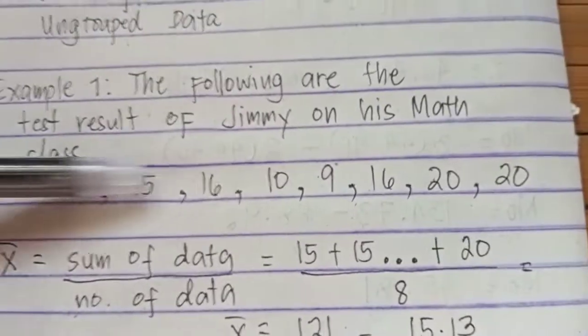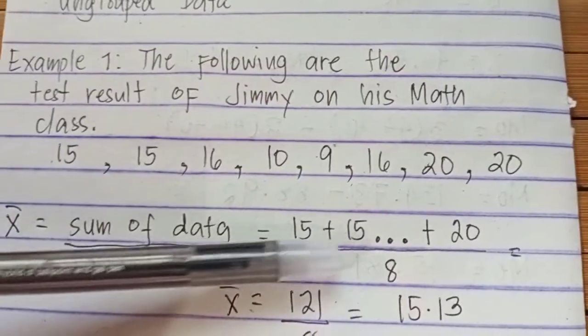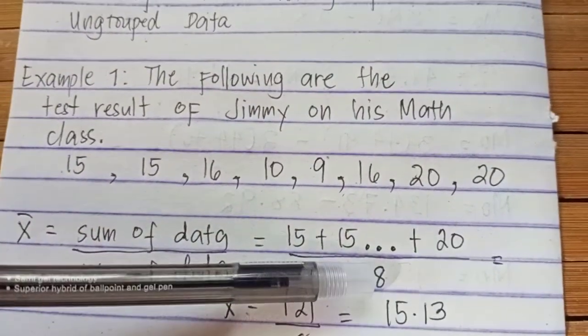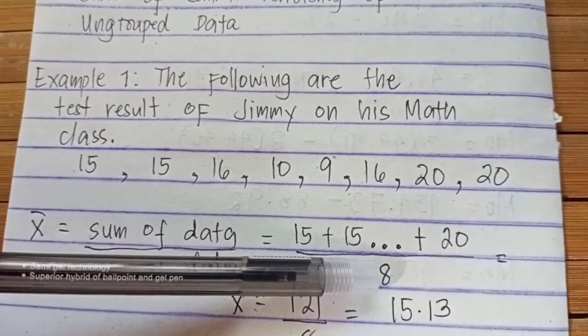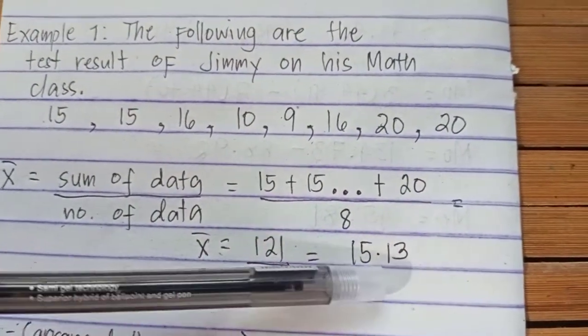You just add all the scores and then divide it by the number of scores. So 15 plus 15 until 20 divided by 8, since there are 8 scores. You have there 181 divided by 8, you get 15.13 as the value of the mean.